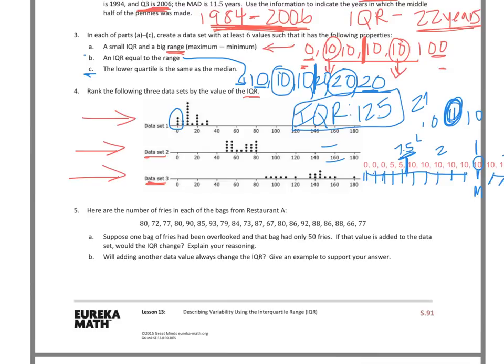For question 5, we have the number of fries in each bag from Restaurant A. Suppose one bag was overlooked and it had only 50 fries. If that value is added to the data set, will the IQR change? You'll want to find the IQR of the existing set and then see what happens when you add 50. For part B: will adding another data value always change the IQR? Give a quick example to support your answer.